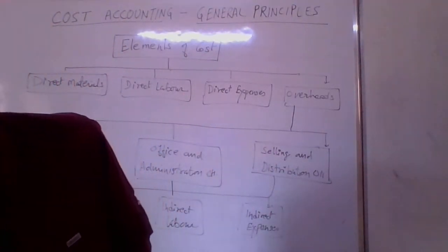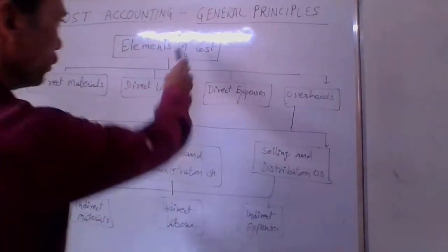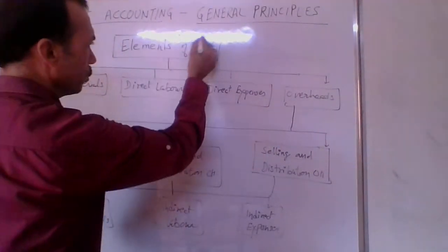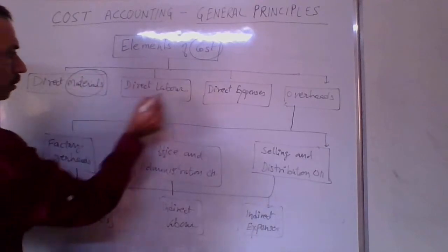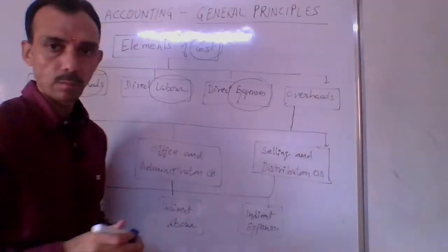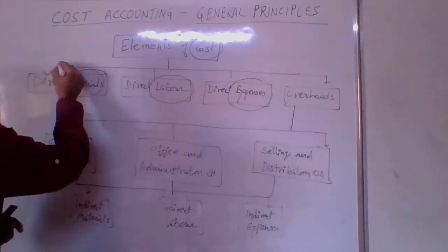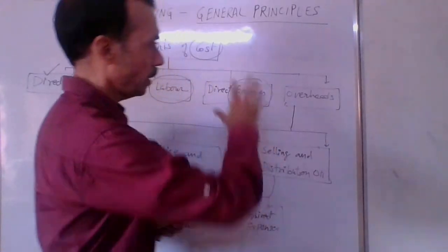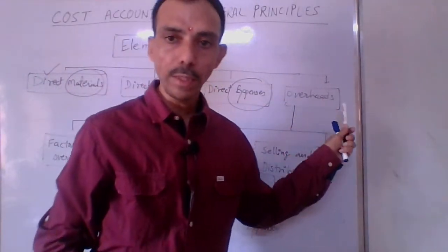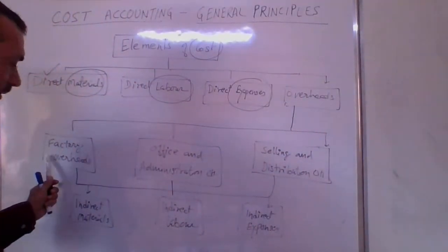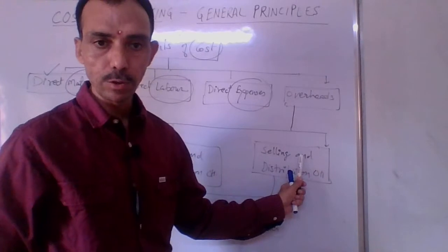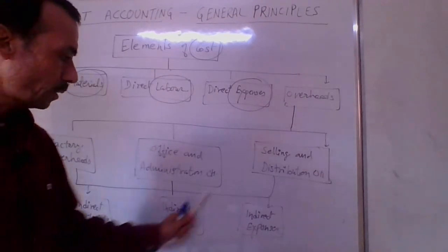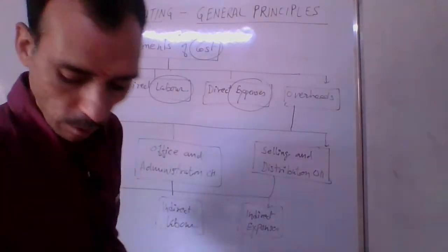So elements of cost are: direct material, direct labour, and direct expenses. The costs are either materials, labour, or expenses — these may be direct or indirect. All the indirect costs are clubbed together as overheads, which are further divided into factory, office and administration, and selling and distribution. Under each, there are indirect material, indirect labour, and indirect expenses.